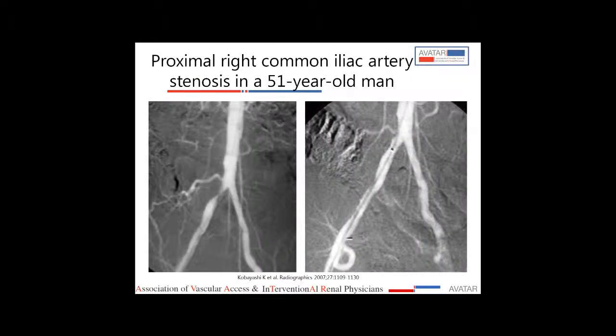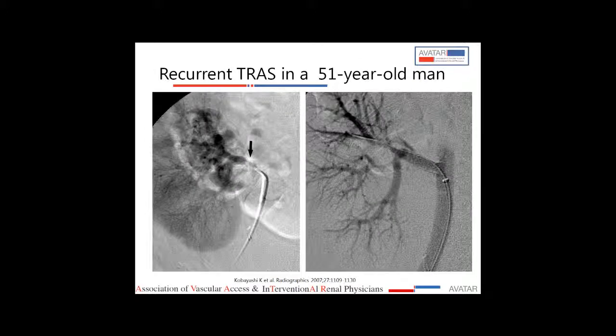Another example illustrates the importance of complete iliac angiography before renal artery intervention. In a 51-year-old man with recurrent TRAS, post-angioplasty imaging showed residual stenosis at the anastomotic site, indicating a need for stenting. A stent mounted on a same-size balloon is deployed at the site of dilatation. After stenting, the patient requires double antiplatelet therapy for 3 months, followed by single antiplatelet therapy.